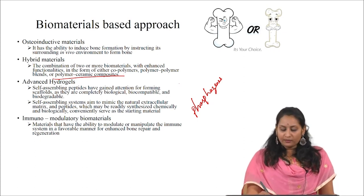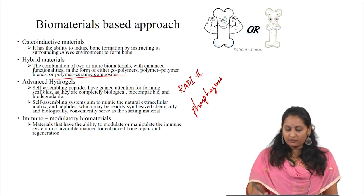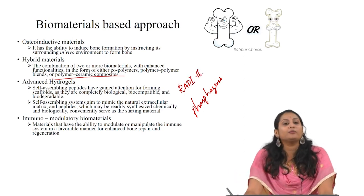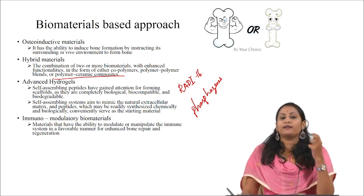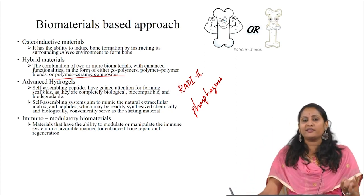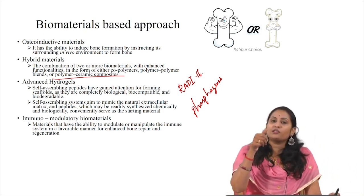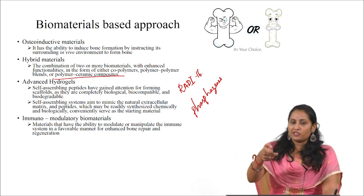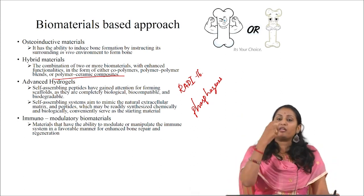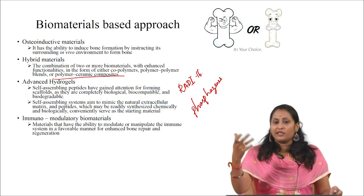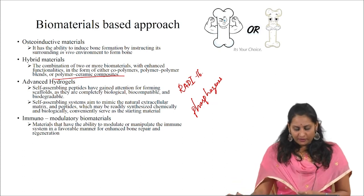For example, RAD16 is a self-assembling peptide that aims to mimic the natural extracellular matrix. It can be readily synthesized and is injected in the form of nanofibers. Once it enters the physiological fluids, it becomes a gel and serves as a template — a starting material for scaffold formation.